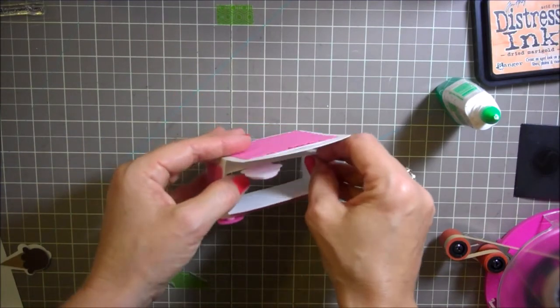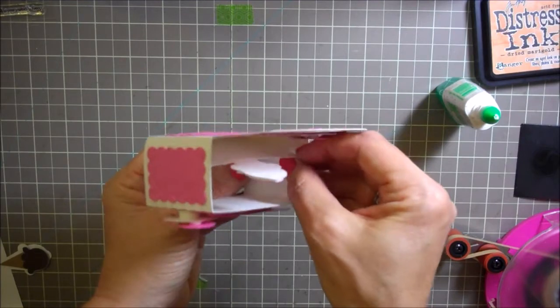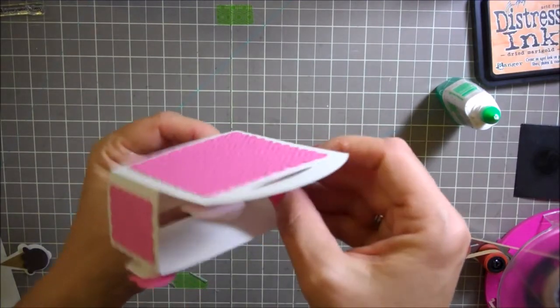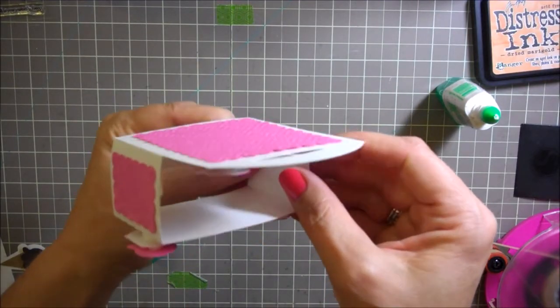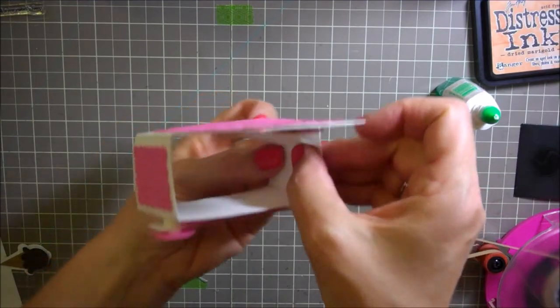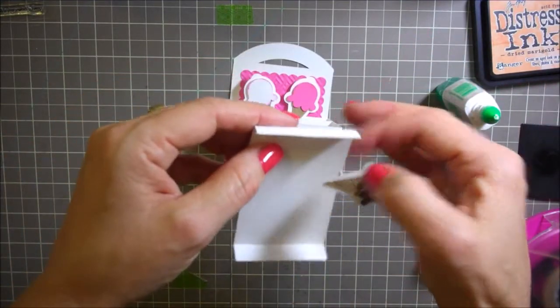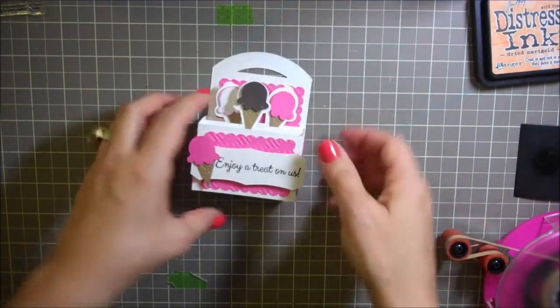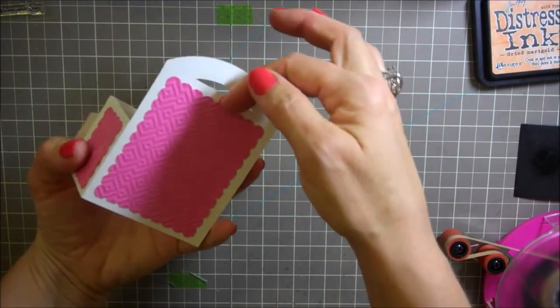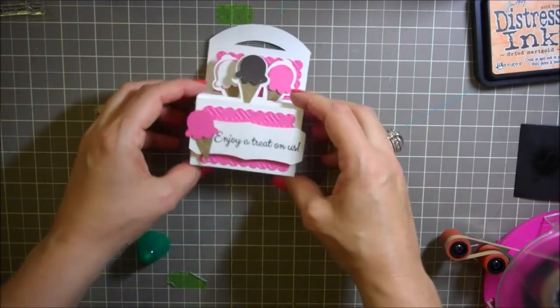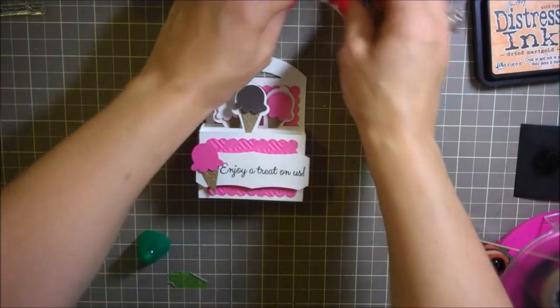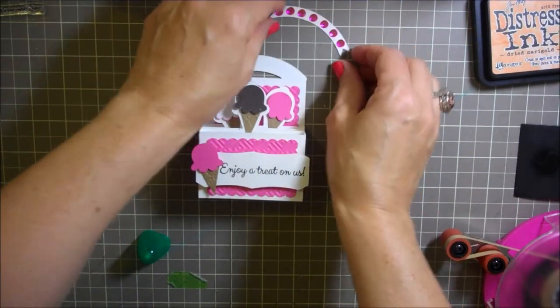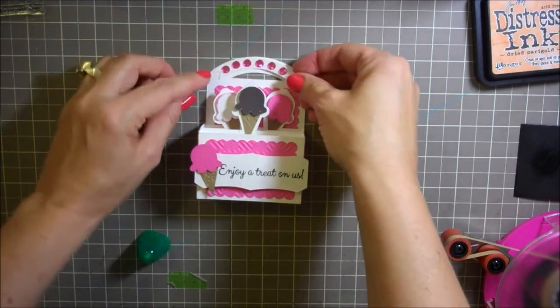Now I'm just going to go butt right up against this one here and I'm going to do the same exact thing. Now we're going to do the last one just like we've done the others. There's all three of them which is really fun. So now I have my pocket here where I can just tuck the money in there and it says enjoy a treat on us.